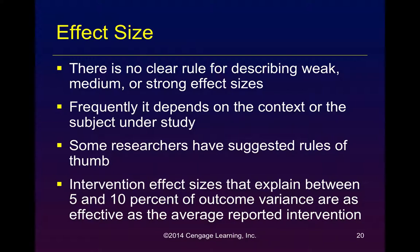As precise as statistics usually is, it is important to remember that the effect size — like the level of significance and the importance you read into correlation coefficients — has no hard and fast rule. When you calculate a Cohen's D, an effect size of 0.8 or higher is usually considered a strong effect size. From 0.4 up to 0.6 is usually considered a medium effect. From 0.2 to 0.3 is a small effect size, and anything under that is considered meaningless.